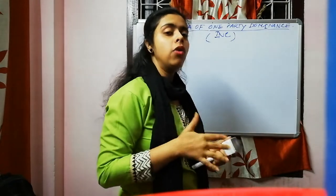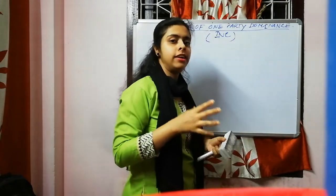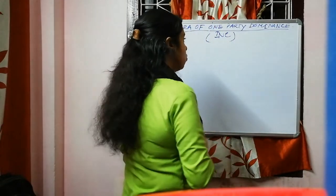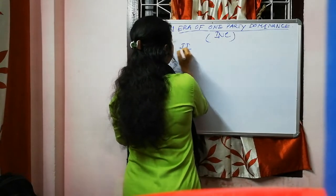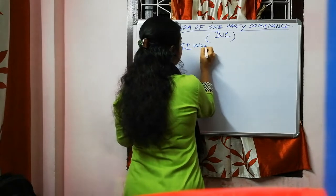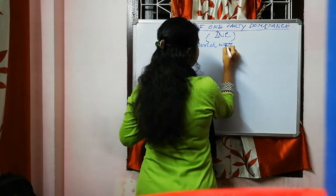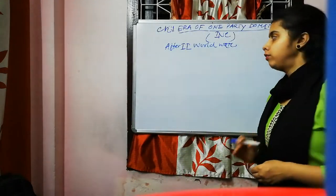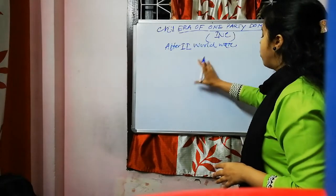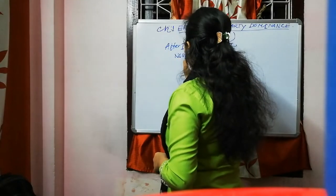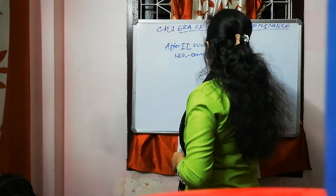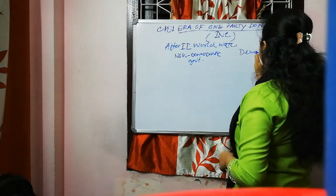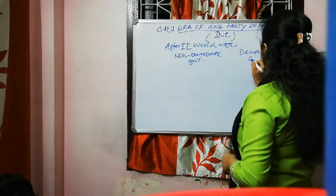Before discussing how Congress dominated elections, let me give you a brief introduction of the whole situation. After the Second World War, many countries got independence, and India was one of them. Among these newly independent countries, one group adopted a non-democratic government and another group adopted a democratic government.